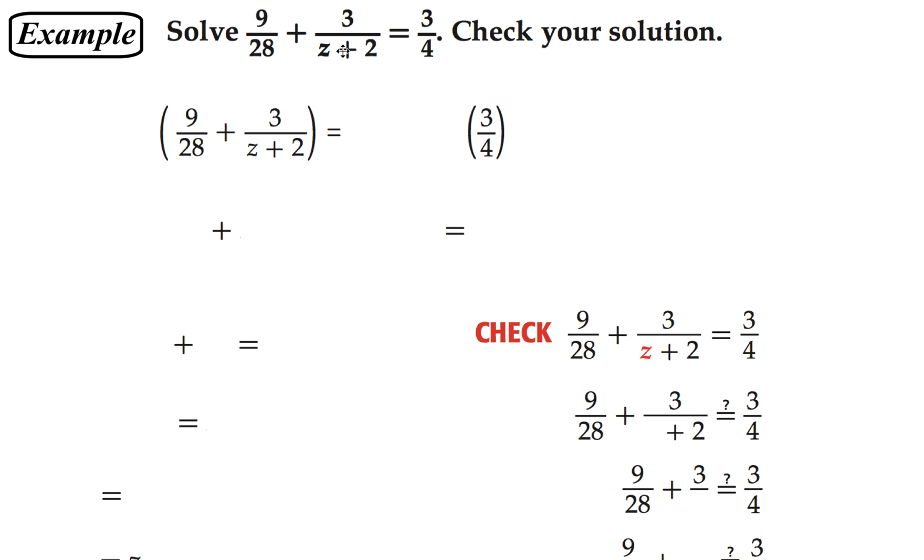So let's jump in and look at an example. We want to solve this rational equation, so we need to first identify what the least common denominator is. The least common denominator, we know we need a z plus 2 term, and then we have a 4 and a 28, but 4 goes into 28, so 28 we're going to use as a factor, and z plus 2 as a factor. So our least common denominator will be 28 times z plus 2.